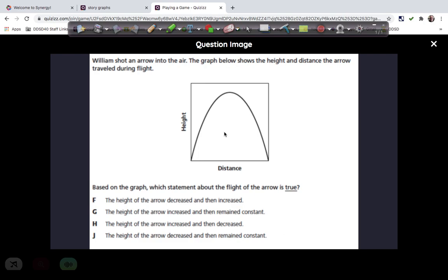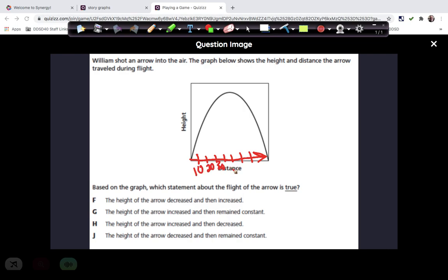It says, William shot an arrow in the air. The graph shows the height and distance the arrow traveled during flight. So this one is a little bit tricky because we're used to time going this direction, and this is distance. So as the distance gets farther away, I assume that that is from William. So if it's 10 feet from him, 20 feet, 30 feet, on and on.